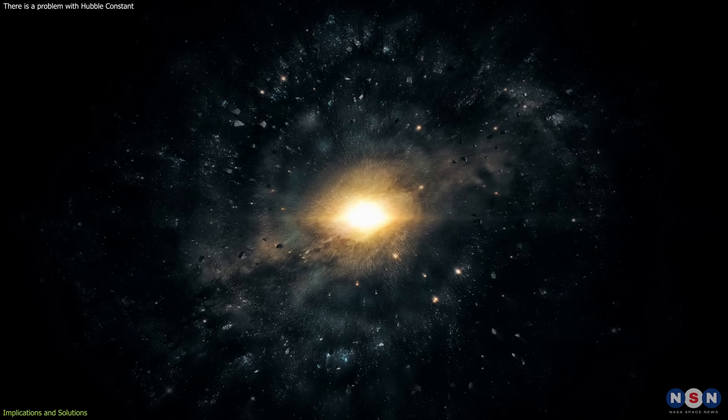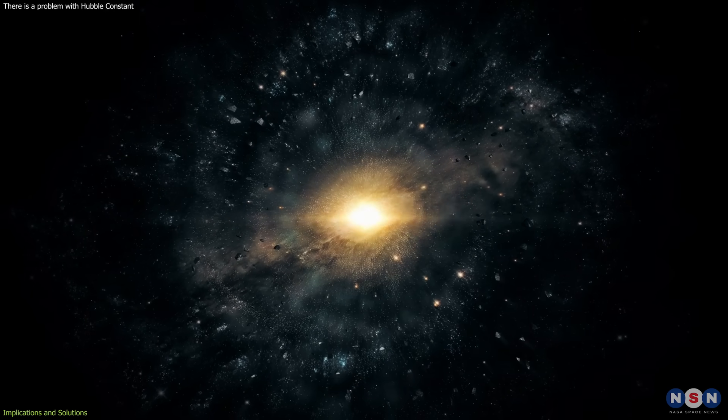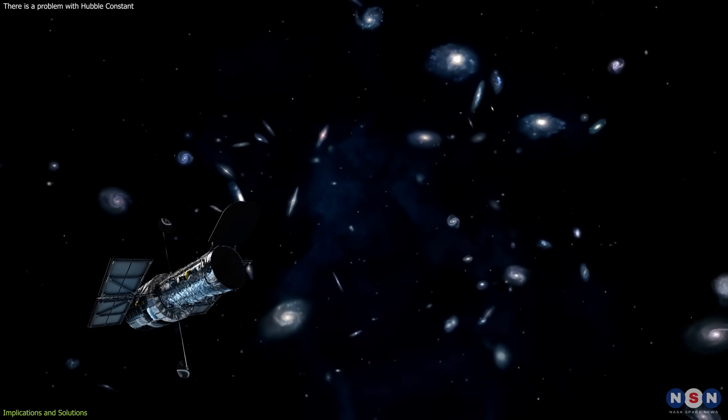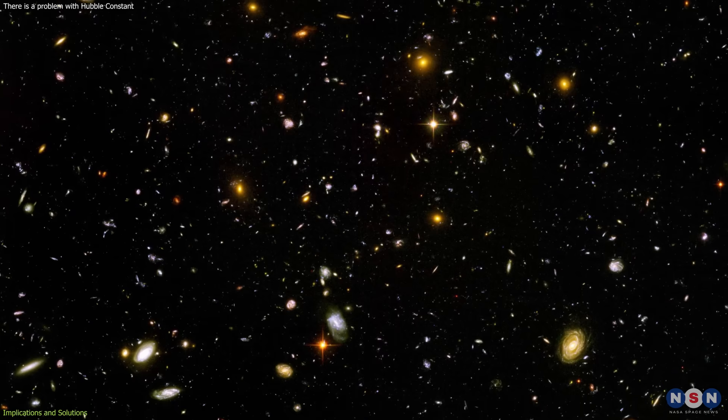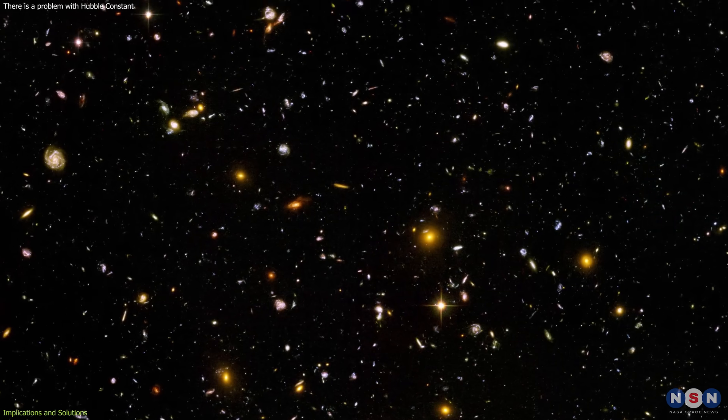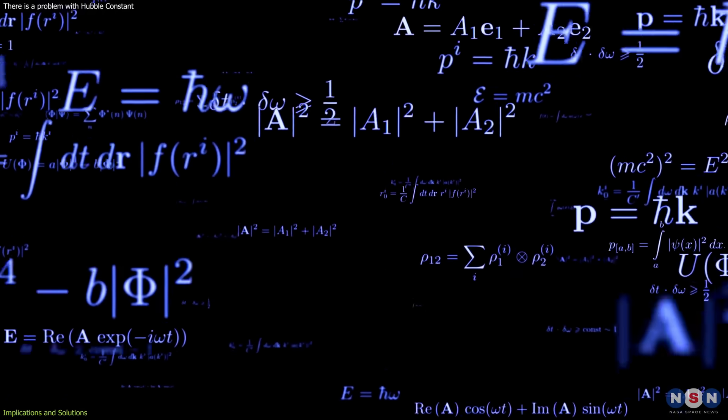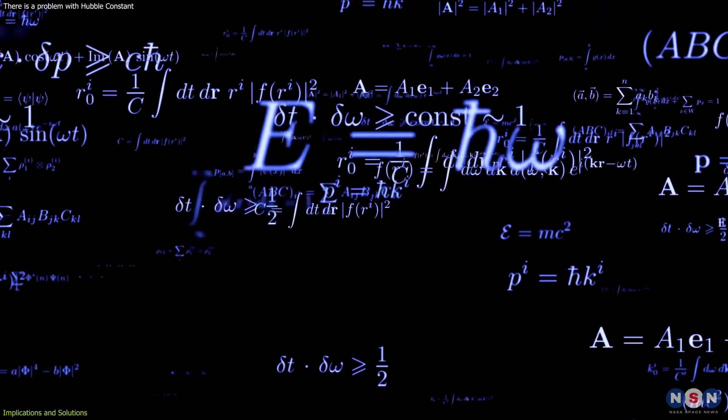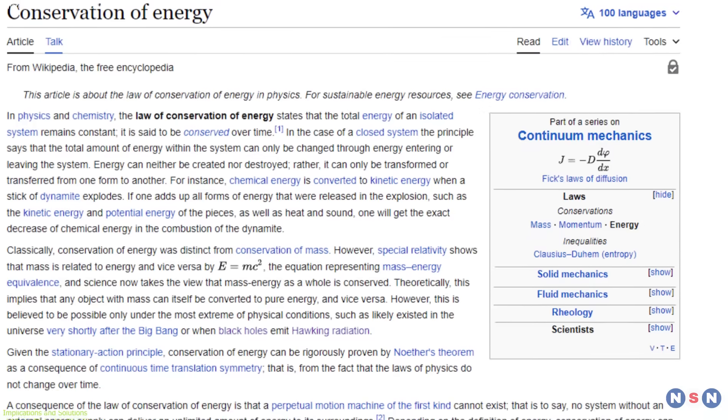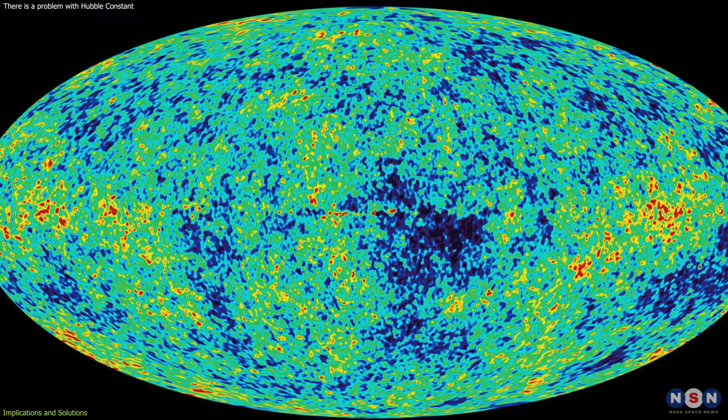However, these possibilities are not without challenges and limitations. For one thing, they lack direct observational evidence, and they may require some fine-tuning or ad hoc assumptions to fit the data. For another thing, they may violate some of the established principles or symmetries of physics, such as the equivalence principle, the conservation of energy, or the isotropy of the universe.